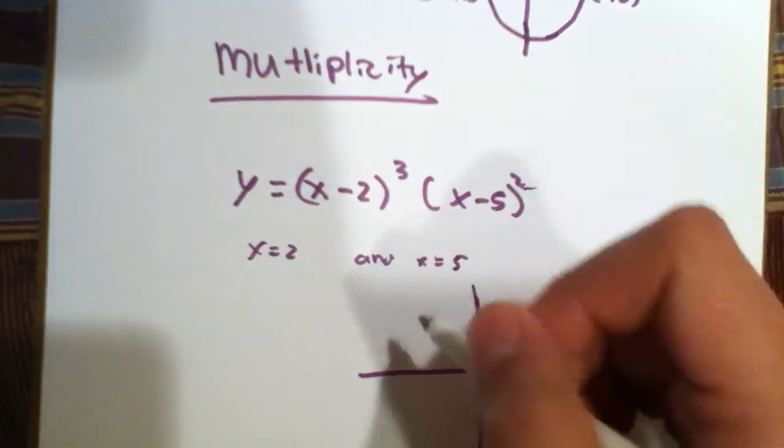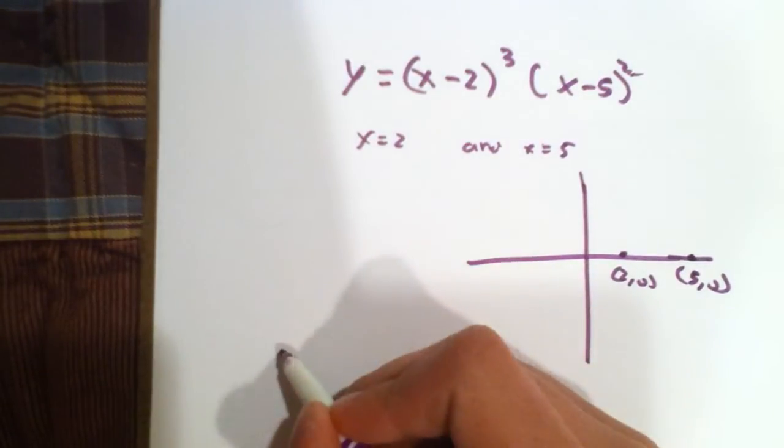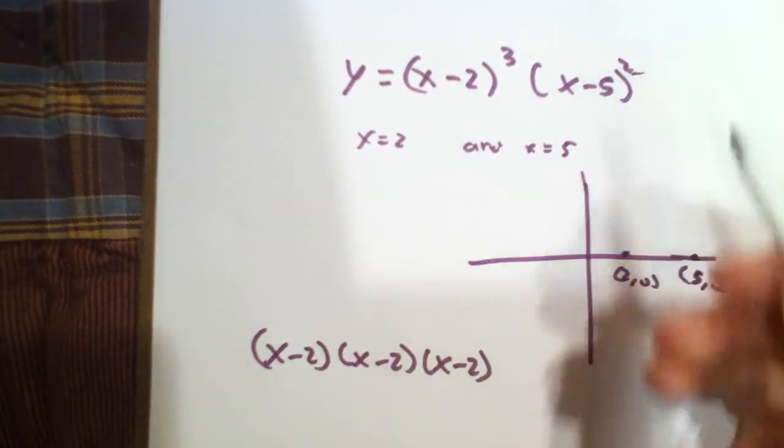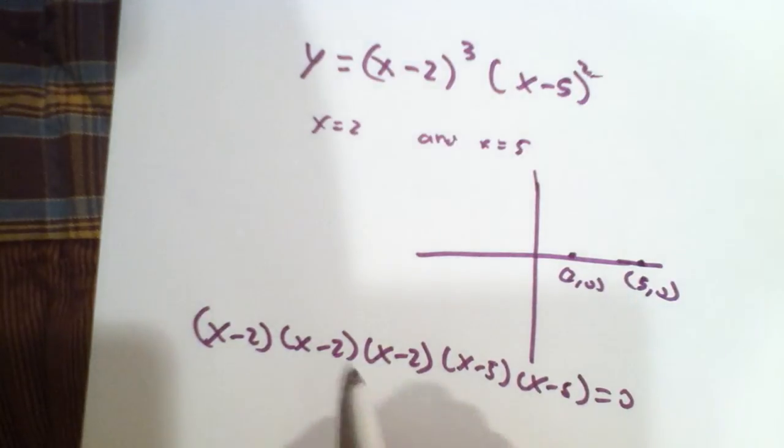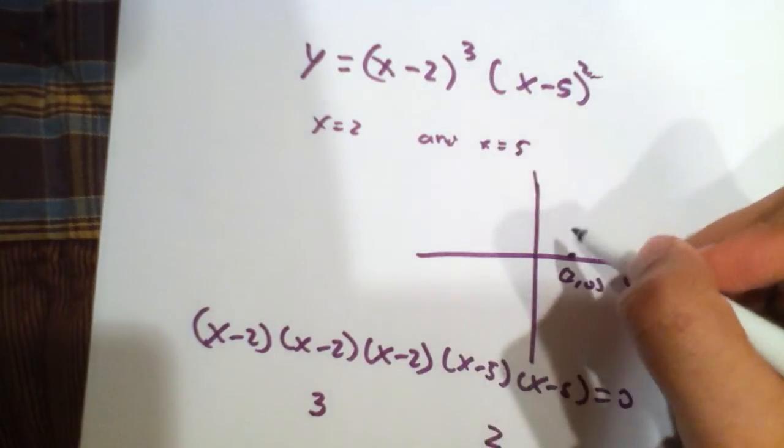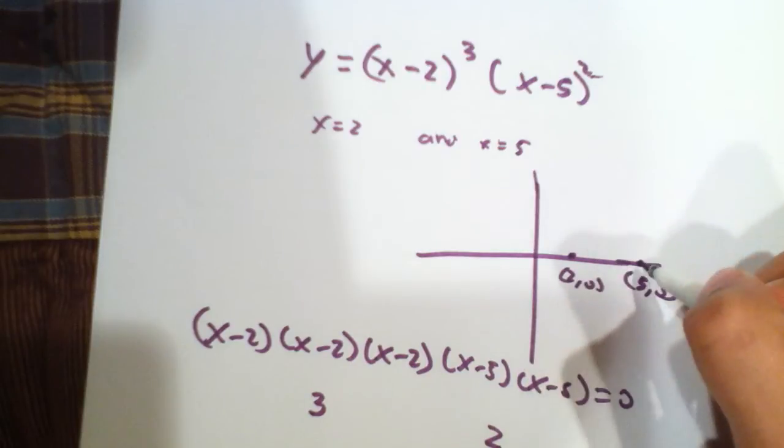Multiplicity is the amount of times the same root can be solved for. So, if you actually write this out, this would actually be x minus 2, x minus 2, it will be x minus 2 three times, because it's cubed, and x minus 5 twice, like that, because that's squared, and that equals 0. So, you actually get 2 as an answer three times, and you get 5 as an answer twice. And this, you get 5 two times, and 2 is an even number, while 3 is an odd number. And if it's an odd number, if this exponent here is an odd number, it goes through at that point, and if it's an even number, it only touches.